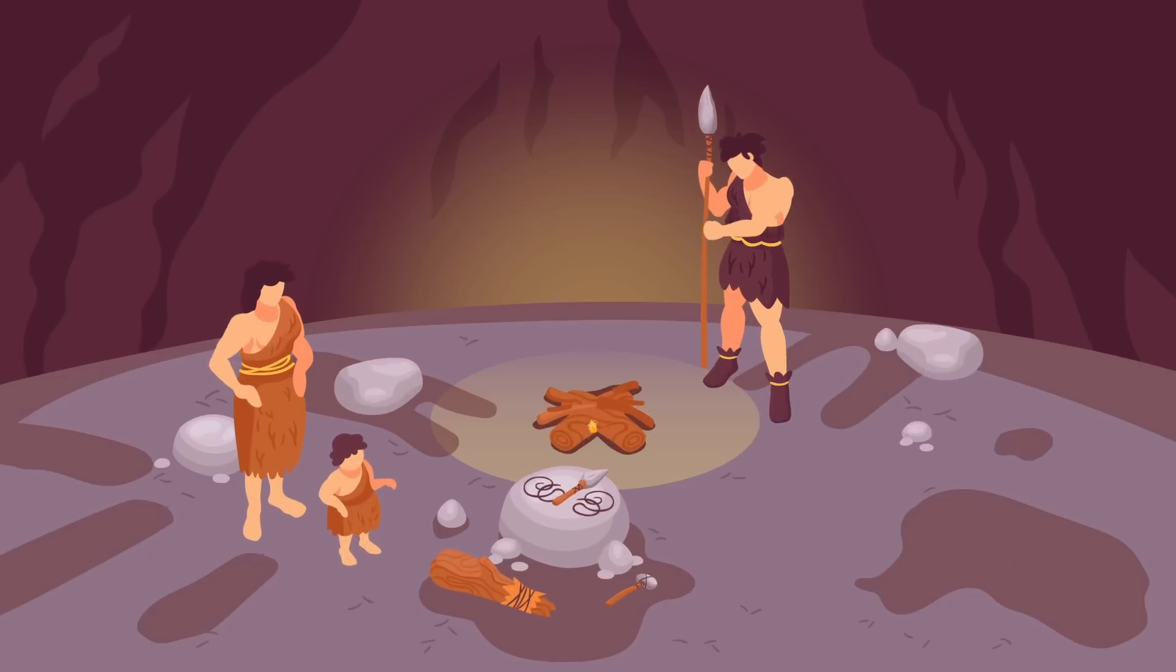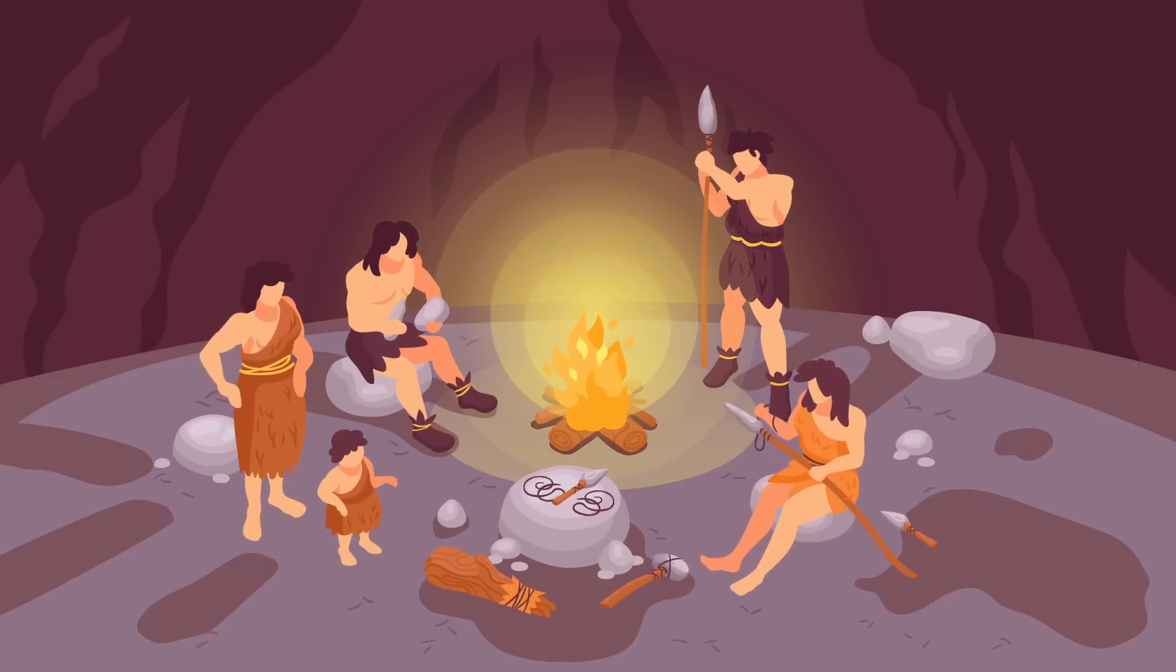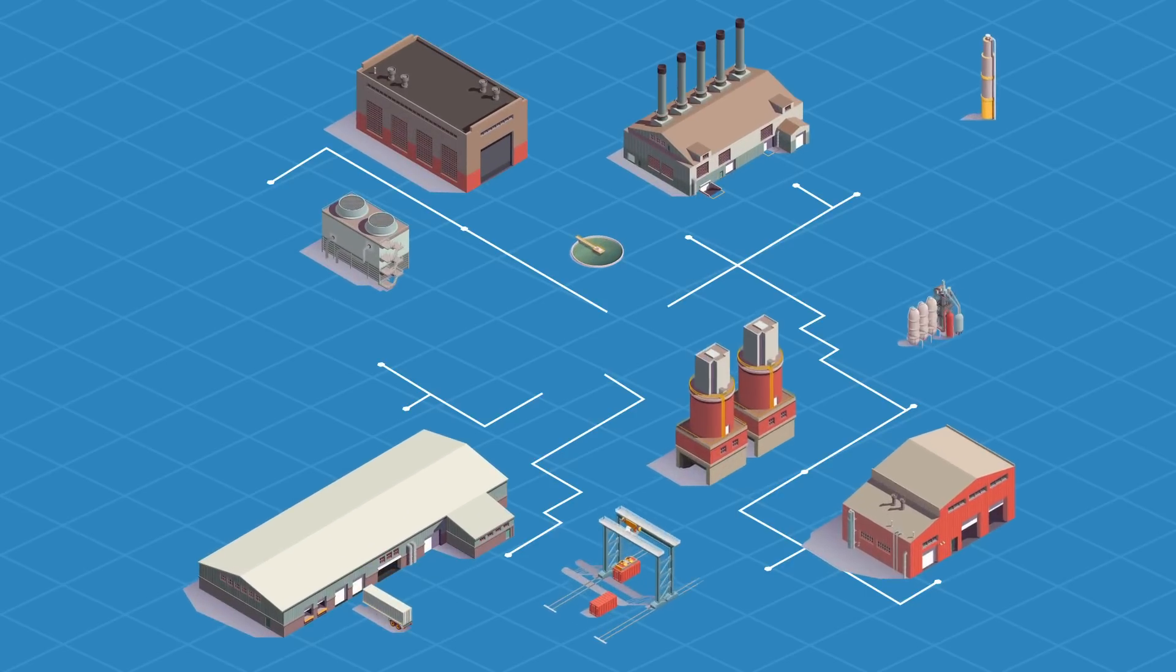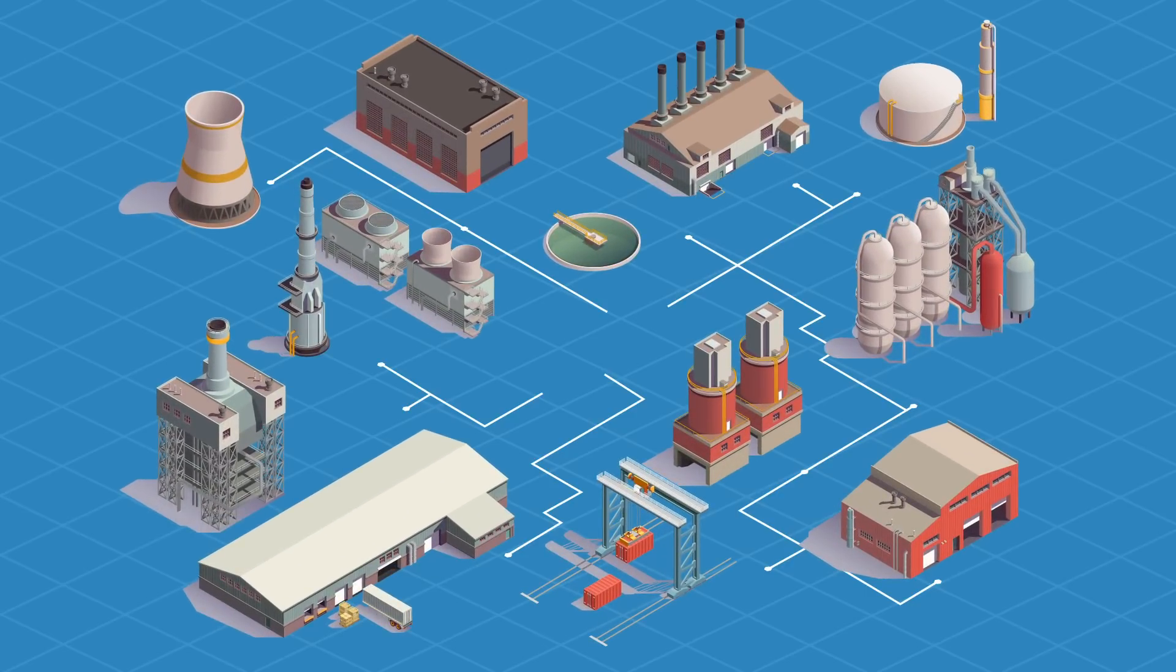For most of human history, our ancestors relied on very basic forms of energy: human muscle, animal muscle, and the burning of biomass such as wood and crops. But the industrial revolution unlocked a whole new energy source, fossil fuels.